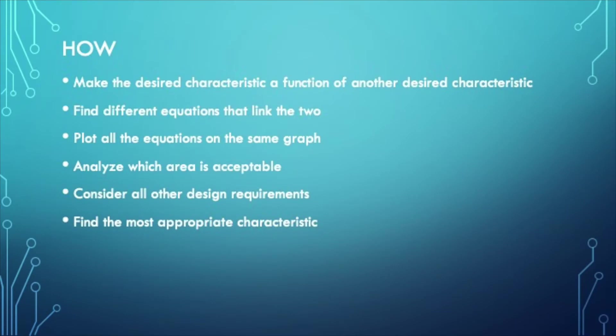Okay, now we get to the how. The how is sometimes a bit complicated. What we're going to do is make one desired characteristic a function of the other one. Then we're going to find different equations that link the two. Then we're going to plot all the equations on the same graph.